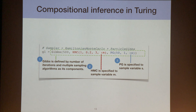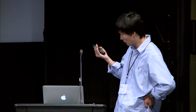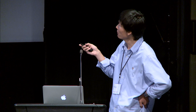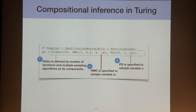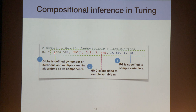Here is how we apply a compositional inference algorithm in Turing. We create a Gibbs sampler with two steps. The first step is an HMC step, with an argument specifying the subset of parameters — here, column M — that HMC will sample. Similarly, Particle Gibbs uses column S to indicate it is responsible for sampling variable S. The Gibbs wrapper iterates between these two component samplers for 500 iterations, returning 500 MCMC samples.